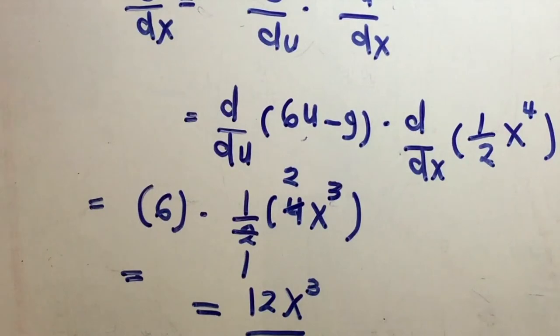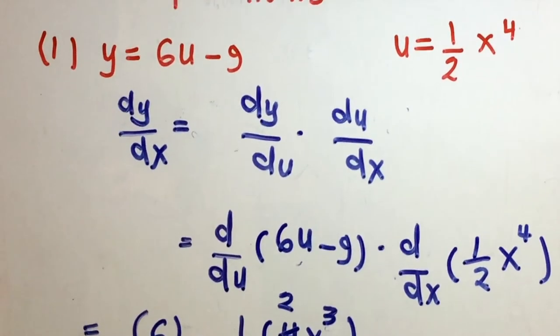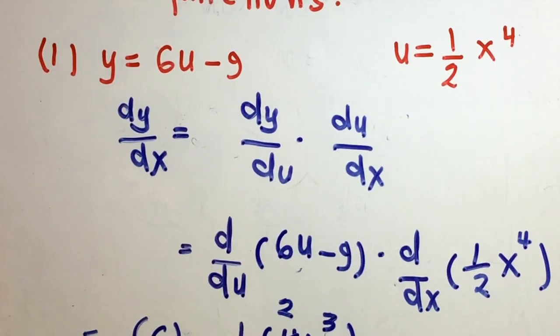So the derivative of the composite function is 12x cubed. That's how we find the derivative of a composite function.